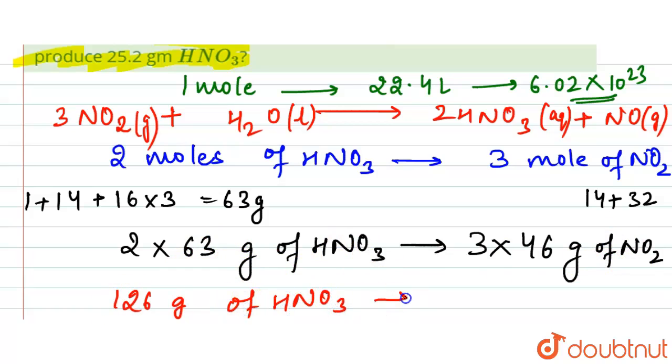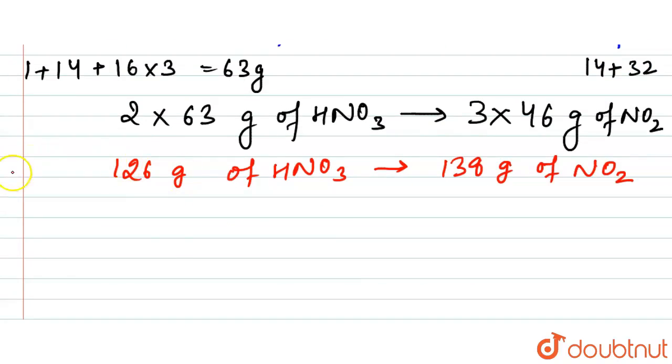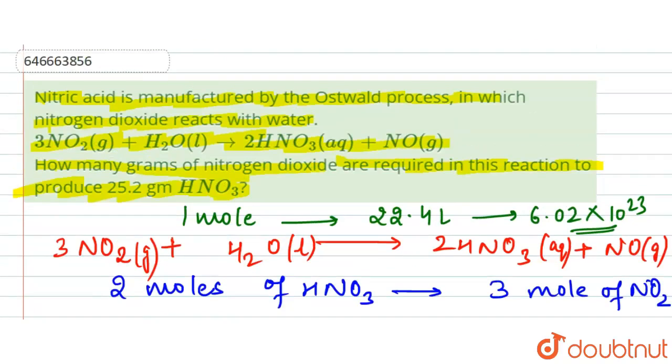Now, if 1 gram of HNO3 is produced by 138/126 grams of NO2, then we want to know for 25.2 grams. So 25.2 grams of HNO3 will be produced by 138/126 × 25.2.